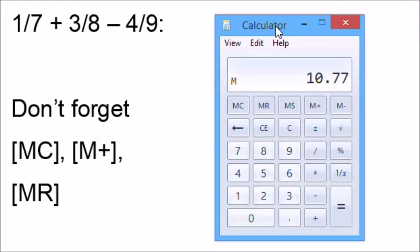Let's calculate 1 7th plus 3 8ths minus 4 9ths. As always, we start by clearing memory. Then we'll work on the fractions. 1 divided by 7 equals, add it to memory.